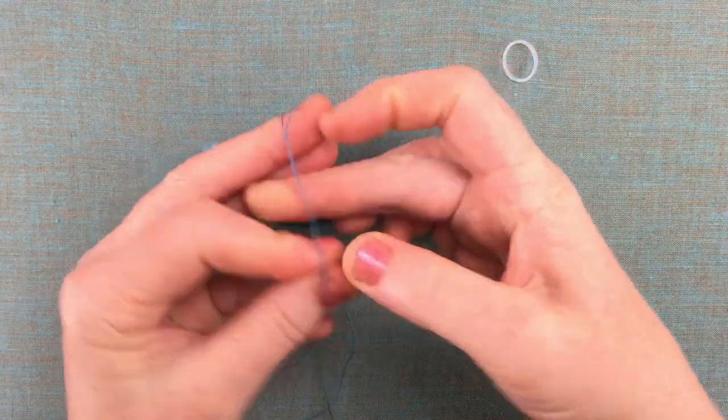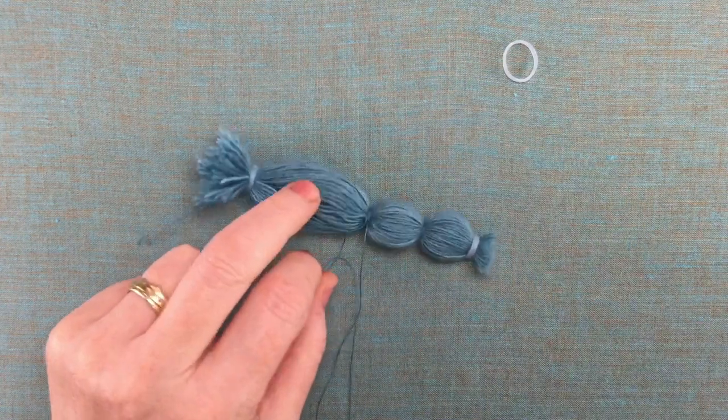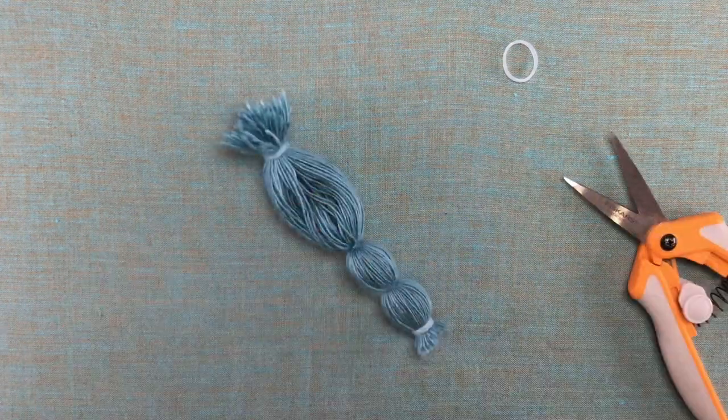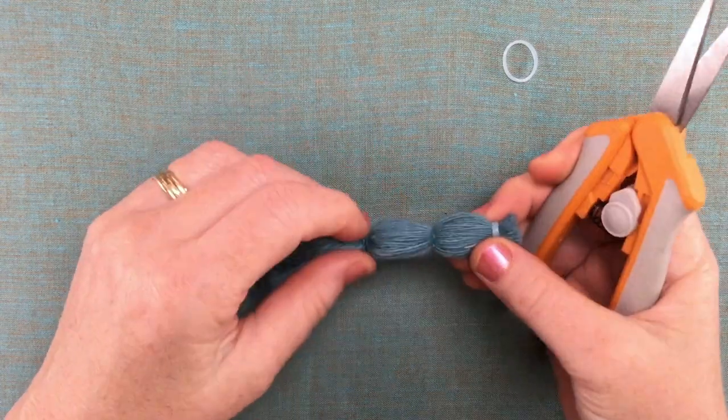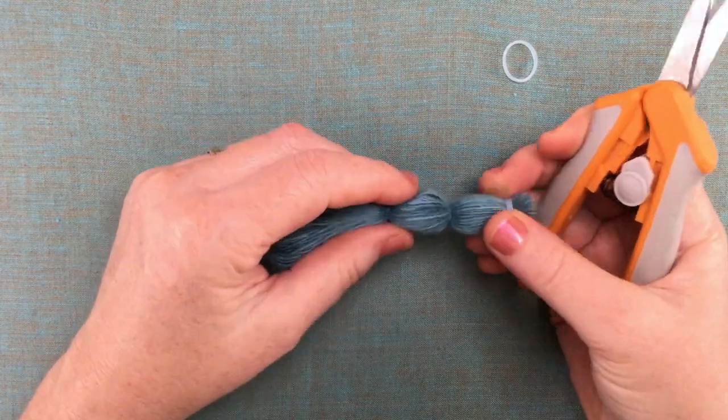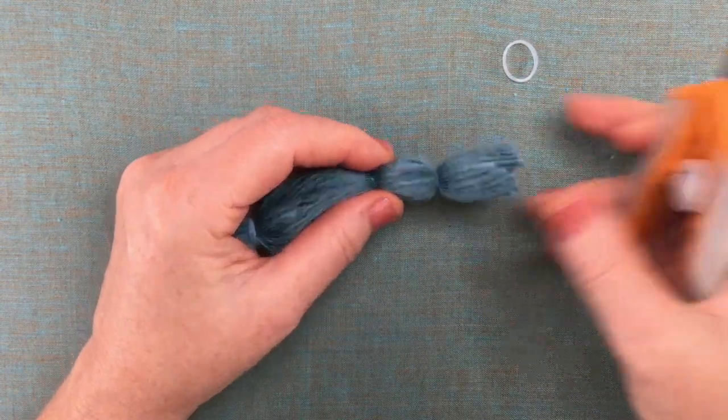So the next thing you can do is just knot off your thread a few times and trim it and then we'll move on. The fun thing about this technique is you can make multiple pom-poms out of the same strip that you've made here. This would probably make about four.